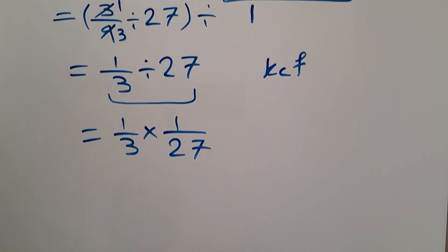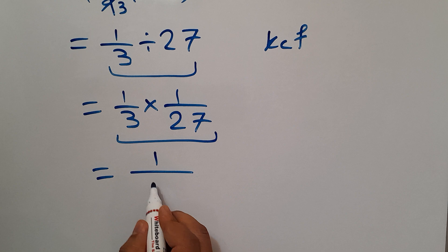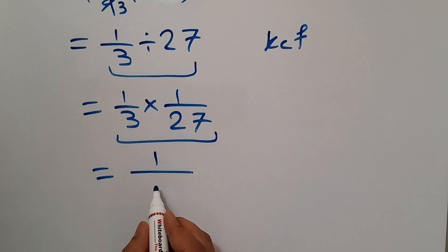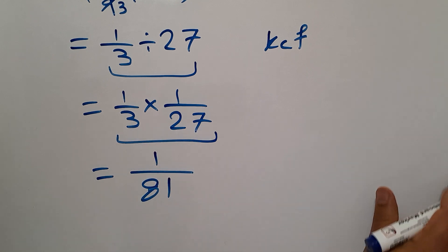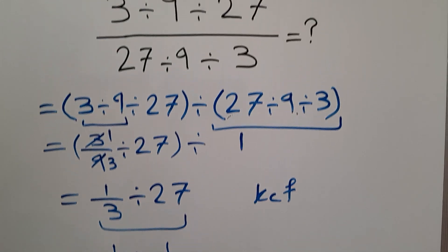And this is equal to 1 over 3 times 27, which equals 81. So our final answer to this problem is just 1 over 81.